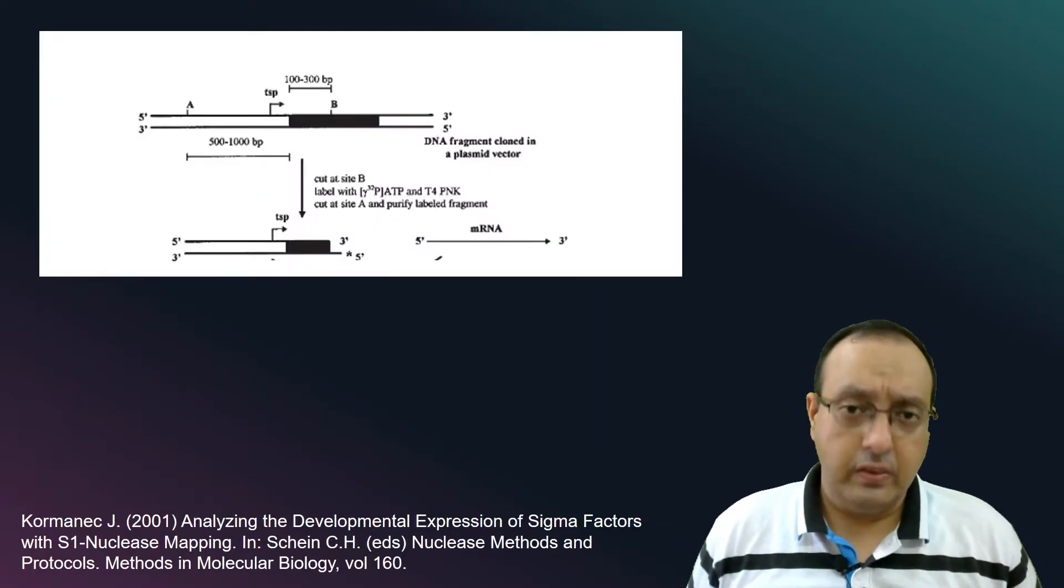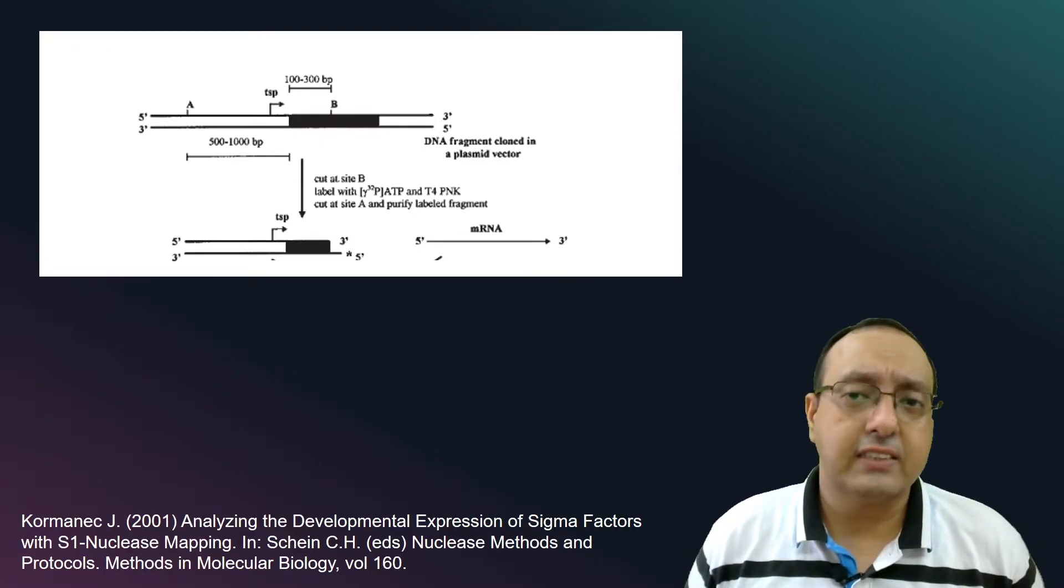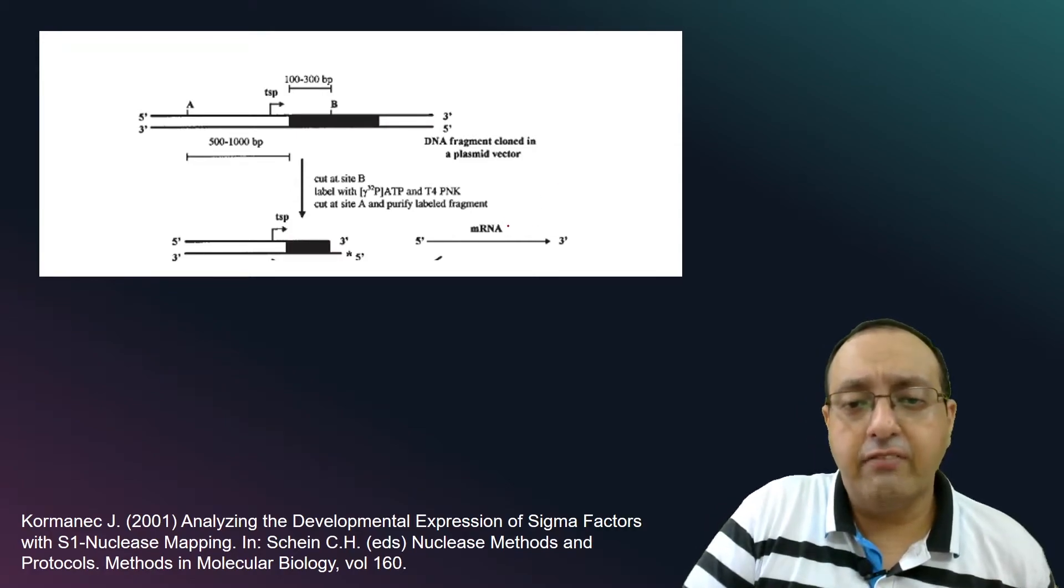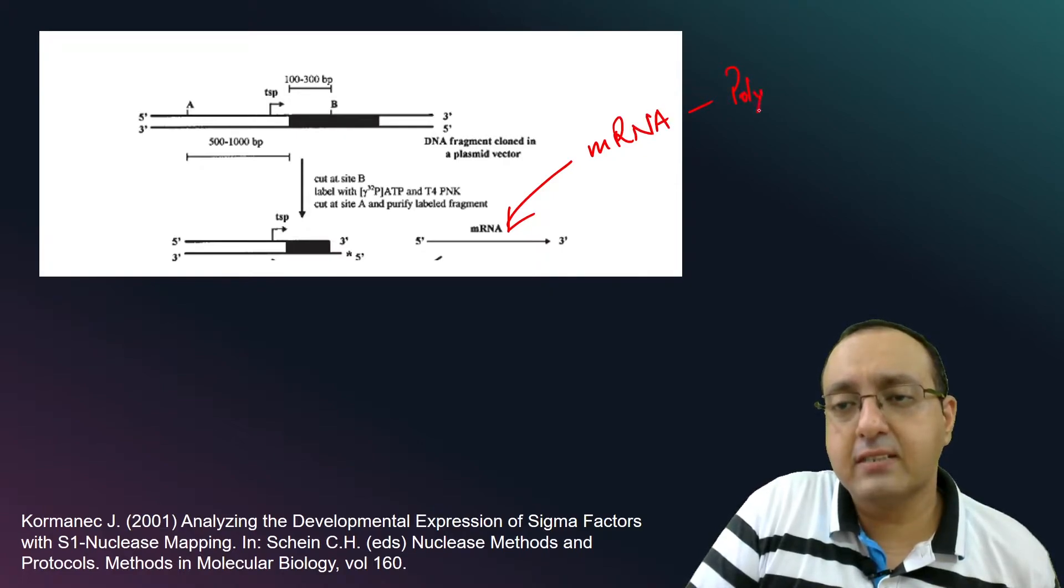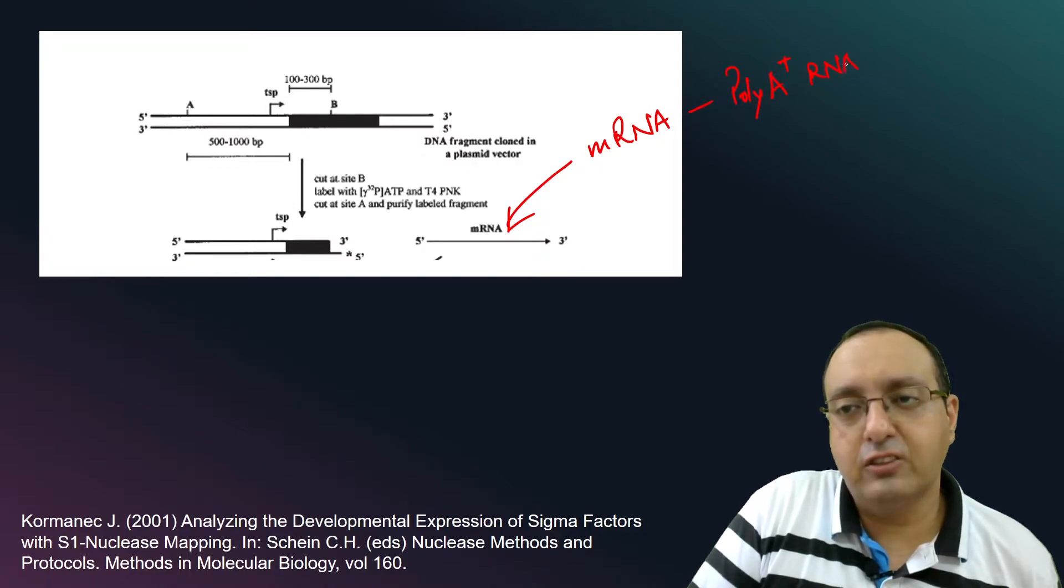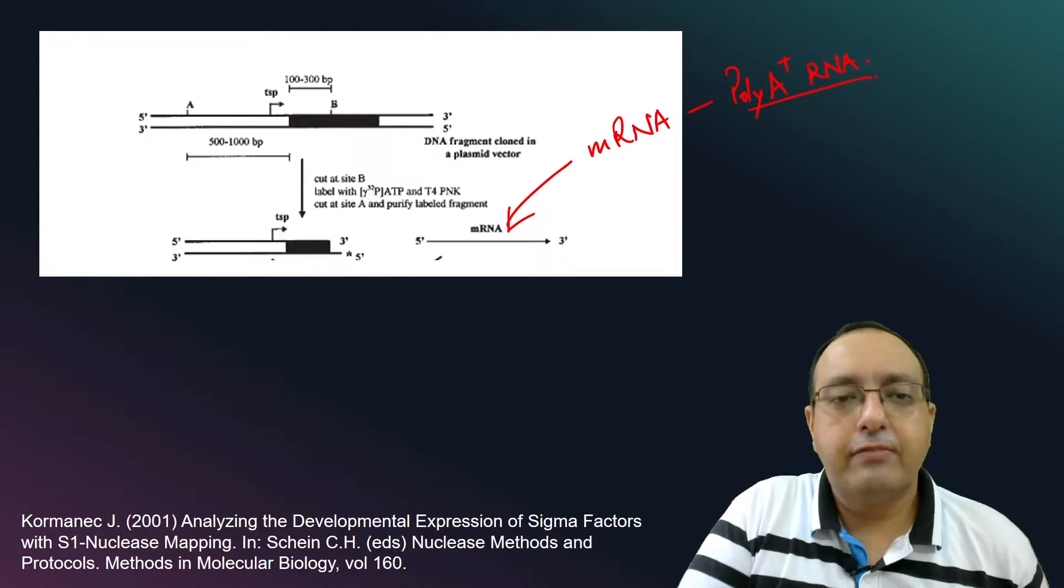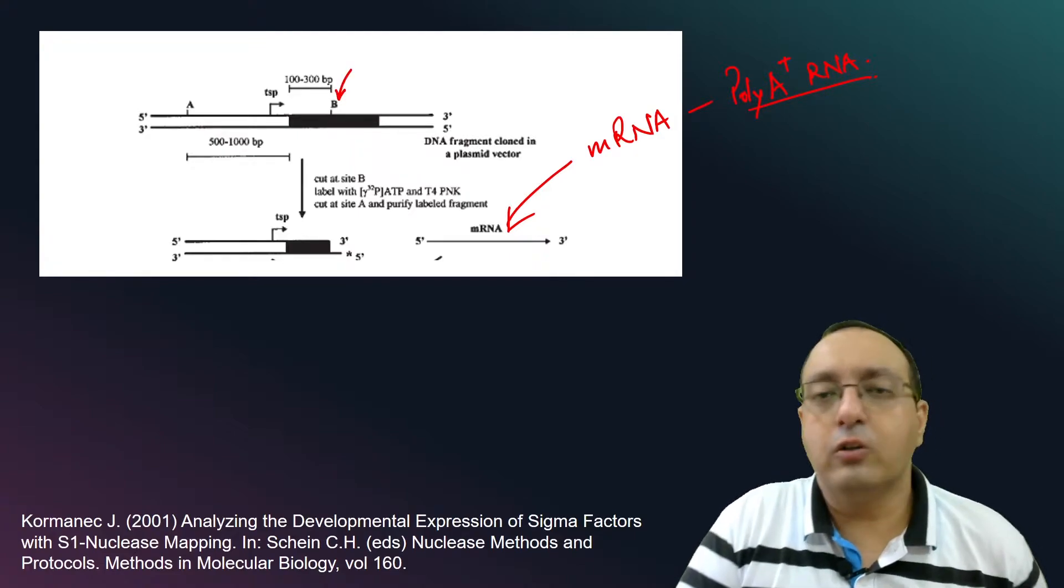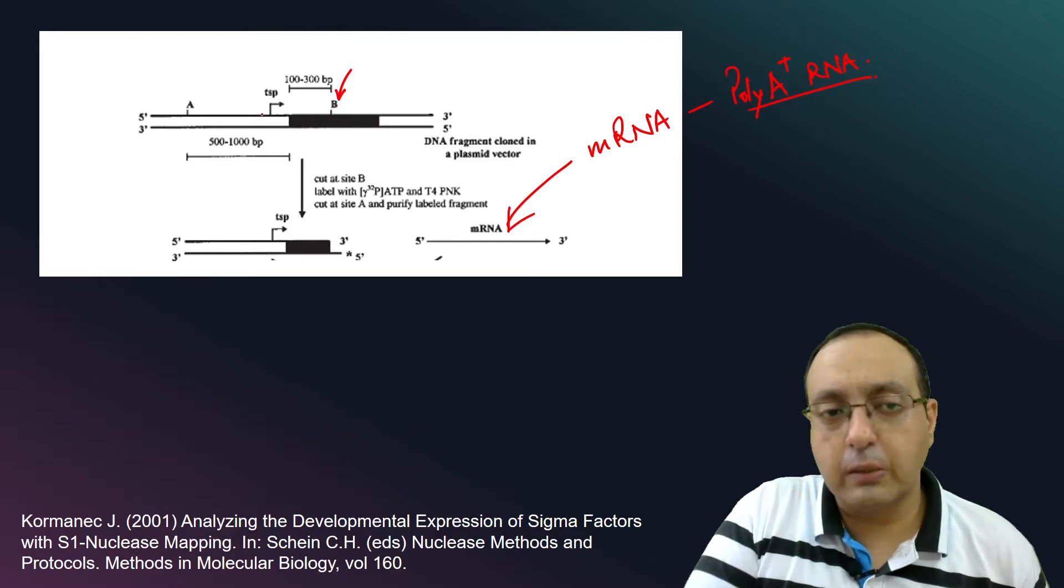So what do we do? We take our gene of interest whose transcription start site we are interested in mapping. On the other hand, we have the mRNA pool. So this is our polyA plus mRNA or polyA plus RNA, which automatically means mRNA. And here we have some restriction site that we know is within the gene and pretty close to the transcription start site.